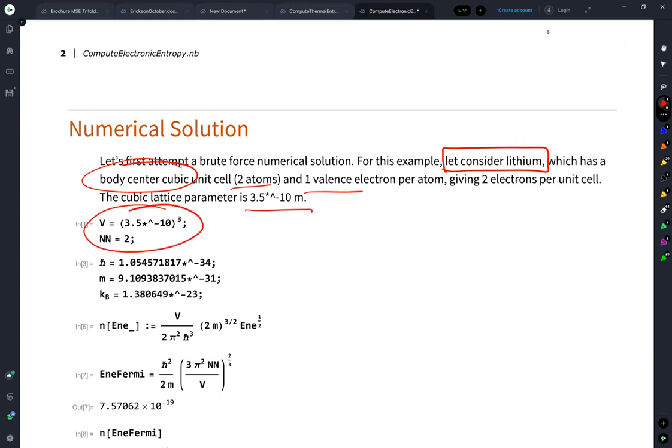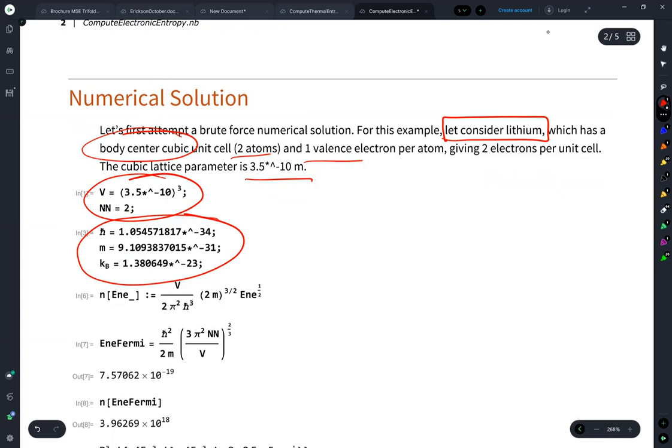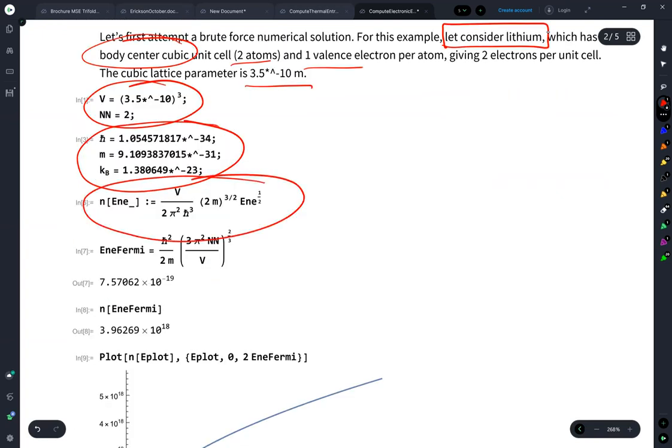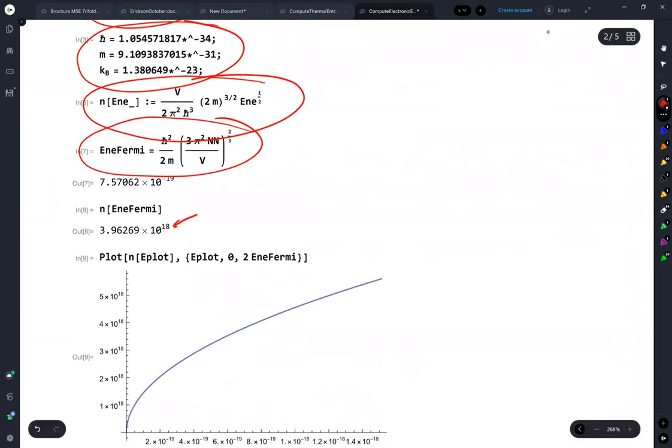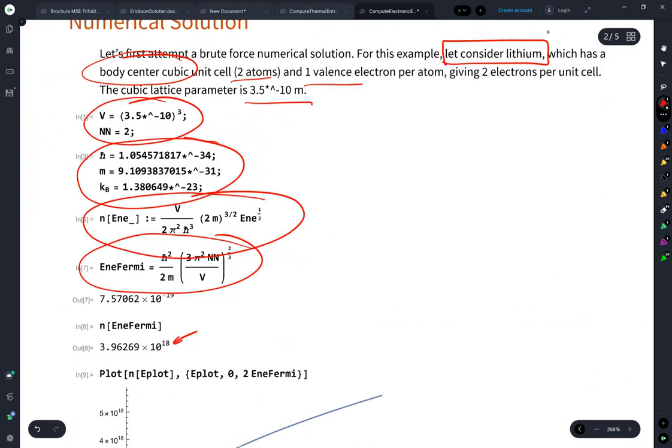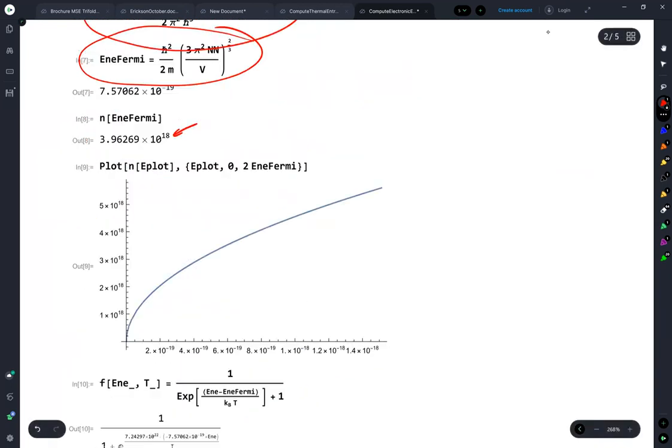So here are our physical constants, here's the density of states, Fermi energy. And I converted all of these into SI units. Not necessarily the units I'd want to work with if I was working derivations in solid state physics, but in terms of actually getting real numbers out, this is the way to go. This is the shape of our density of states. So it goes as energy to the one half.